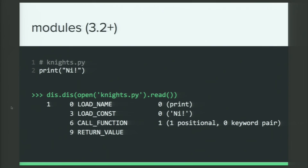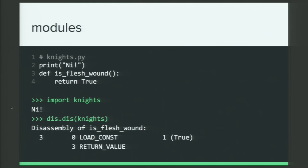And another way we can dis a module is by importing it and then dissing the imported object. In this case, Knights.py got a little more complicated. We added this method is_flesh_wound or function is_flesh_wound, which always returns true. And as you'll notice, when I import Knights, the whole module is getting executed. It prints knee. But in the disassembled bytecode, we don't see any mention of the printing part. All we see is is_flesh_wound. So, when you do it this way, when you try to dis a module this way by importing it, it's only going to disassemble the functions in that module. Anything else that's there just kind of as a script is not going to get put in the output of dis. So, that's just something to know about the different ways of using dis.